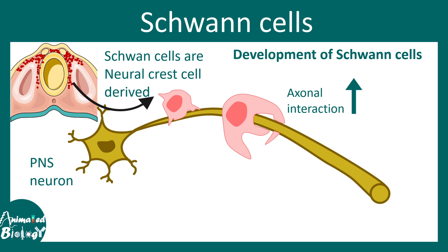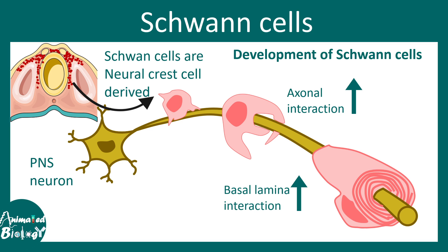The Schwann cell precursor starts interacting with the axon more elaborately, increasing axonal interaction while still being an immature Schwann cell. Eventually, the Schwann cell wraps around the axon several times and interacts with the basal lamina. At this point it has matured.